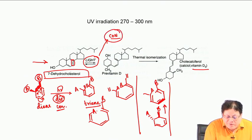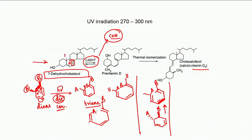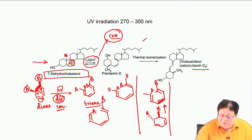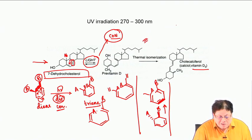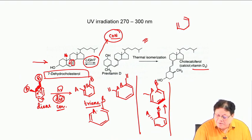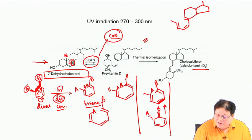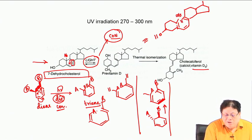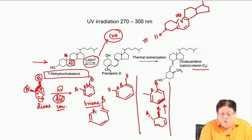In conrotatory motion, the hydrogen is alpha and the methyl is beta. Because the methyl and hydrogen are trans to each other to start with, with light they undergo conrotatory motion and will come both inwards. Coming outwards would make it very difficult to complete the ring closure.